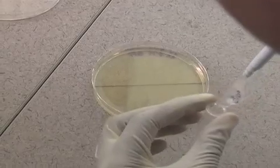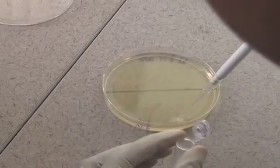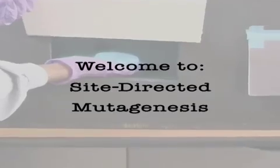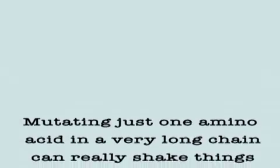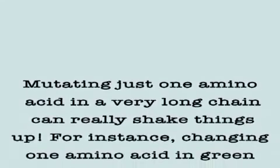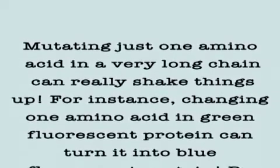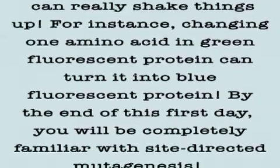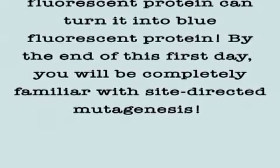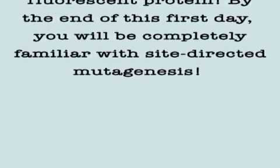Thank you so much for watching. This is my video from ScienceBridge and Mugenesis — it's about mutation. Mutating just one amino acid in a very long chain of proteins can really shake things up. For instance, changing one amino acid in green fluorescent protein can turn it into blue fluorescent protein.